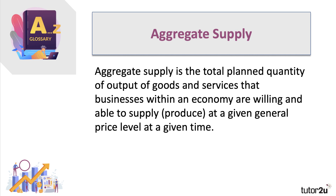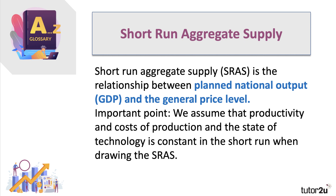In other words, what producers produce at a given general price level in a given time period. Short-run supply is a concept where we artificially create a time period and think about the relationship between planned output — in this case GDP — and the general price level. The key assumption is that productivity, cost of production, and the state of technology are essentially constant in the short run when we draw the short-run aggregate supply curve.